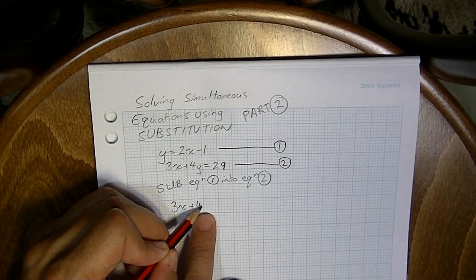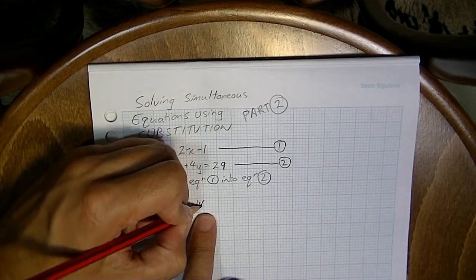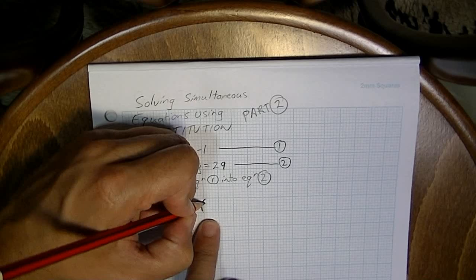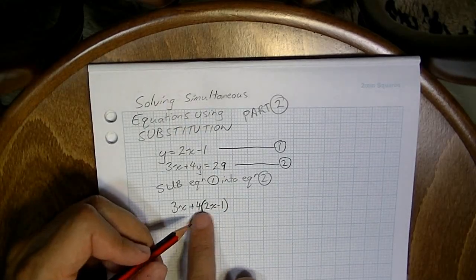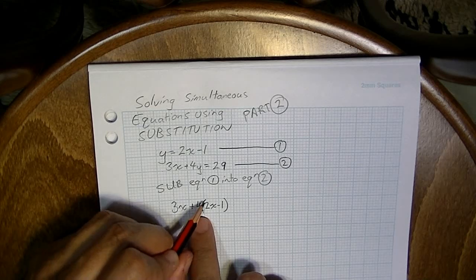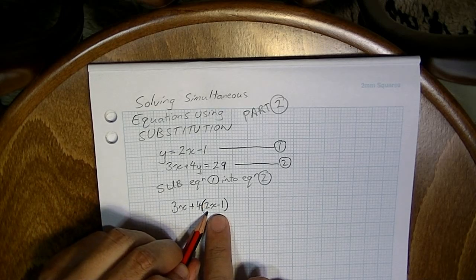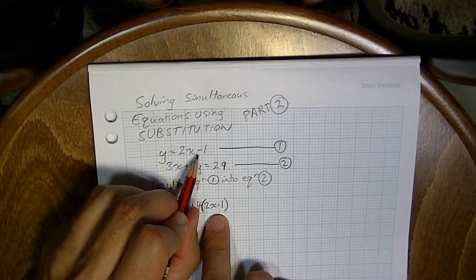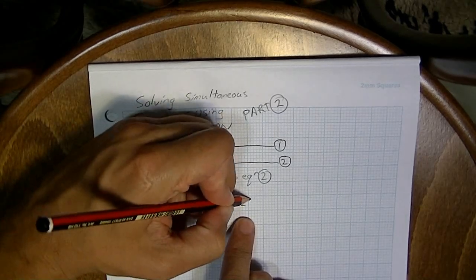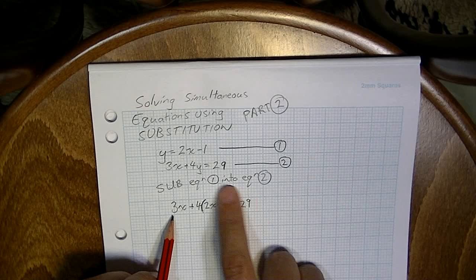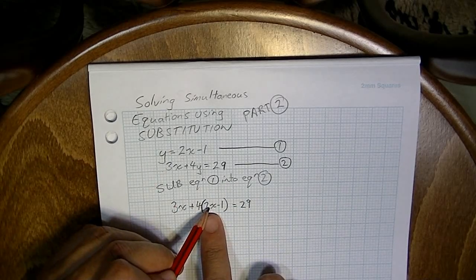So where I see the y, I'm going to put in 2x minus 1. You've got to put this equation in in brackets or things are going to get horribly, horribly wrong. 3x plus 4, whatever y was, which is 2x minus 1, equals 29. So that's equation two with equation one subbed into it.